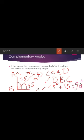The sum of the measures of these two angles is 90 degrees. That means angle ABD and angle DBC are complementary angles.